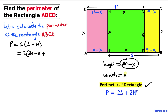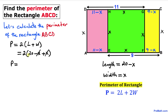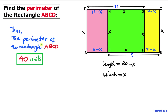The negative x and positive x cancel out, so the perimeter is 2 times 20, which equals 40 units. That is our final answer. Thanks for watching, and please don't forget to subscribe to my channel for more exciting videos. Bye!